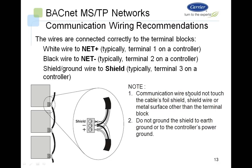When doing the communication wiring, take the white wire to the network positive terminal — typically terminal 1 on a controller — the black wire to network negative, typically terminal 2, and the shielded ground wire to the shield, typically terminal 3. The communication wire should not touch the cable's foil shield, shield wire, or any metal surface other than the terminal block, as this can cause communication issues. Do not ground the shield to earth ground or to the controller's power ground — the shield is always connected to terminal 3 on the controller's terminal block.